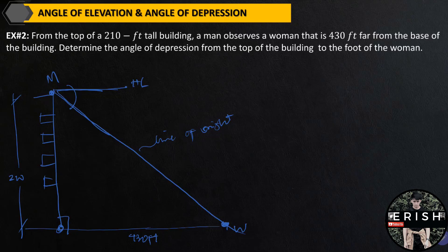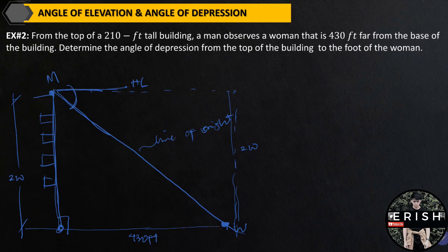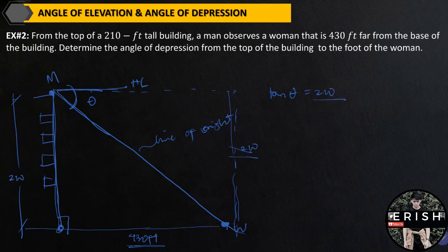Again, considering a triangle, the 210 feet is also equal to this part of the triangle. Since we have a right triangle, this side is also 210 feet. To solve for this, we will again use a trigonometric function. Since we have the height of the building and this distance, we will use the tangent ratio. For tangent theta — say this is theta, the angle of depression we are solving — tangent theta equals opposite (210) over adjacent (430 feet, which is also equal to the base distance).